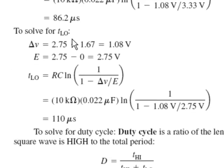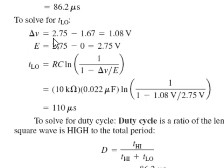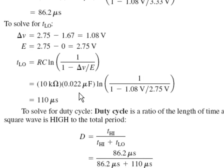The time that it's low, remember that the delta V is the 2.75 down to 1.67. That's the same as before, 1.08. And the E it started at 2.75. It went down towards zero. It was trying to get down to zero. That would be the 2.75 value. Plug that in and we'll find that the T_low is 110 microseconds.